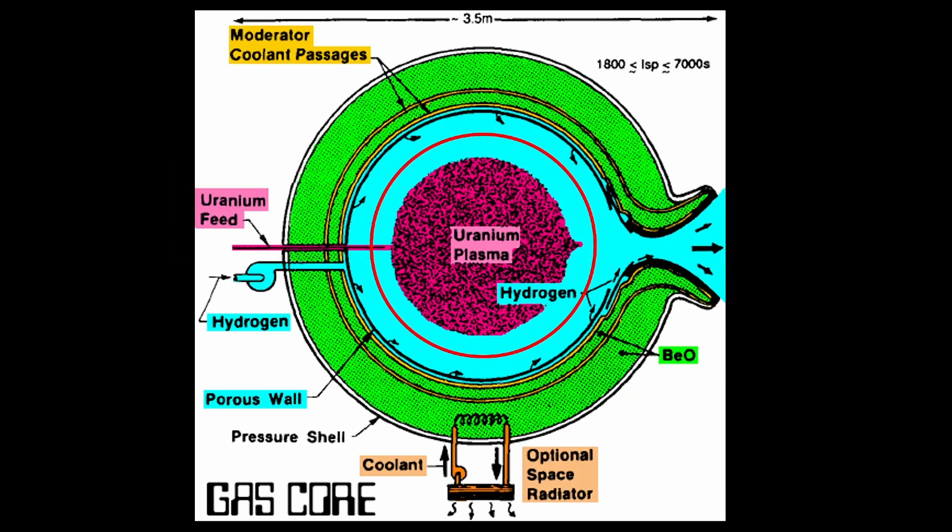This may reach temperatures of 50,000 Kelvin. That is not a misprint. It heats up the hydrogen that is being pumped into the chamber along with tungsten to improve the heat transfer, and the now very hot hydrogen exits the chamber through the rocket nozzle, as does some of the uranium.